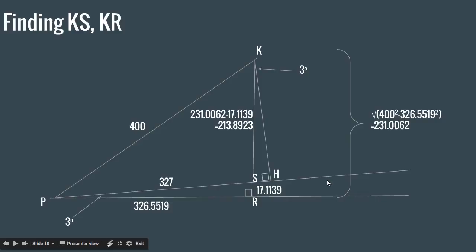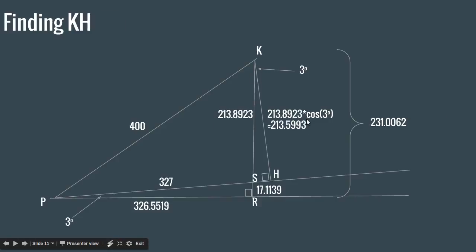And to get closer to KH, I want to find KS. Finding KS is really easy. It's just KR minus SR. 231.0062 minus 17.1139 gives us 213.8923. So that's KS. And we want to find KH, so we have a side and an angle, so we can just use trig to find KH. Since KH is the adjacent to this angle, I use cosine, and I get 213.5993. And that's KH.